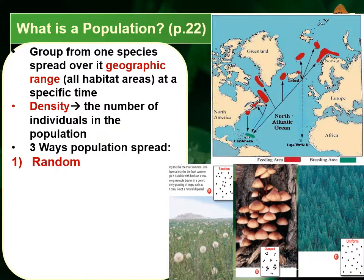We get a random distribution, which basically means single individuals have no real pattern because they're distributed into the environment based on random factors. This would include lots of different types of flowers — individual flowering plants released in random areas around a field — or spiders as well. Spiders are normally solitary organisms; they don't normally live in large groups or interact with each other very much. So their placement around an environment can seem relatively random.